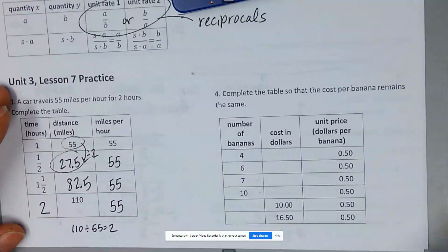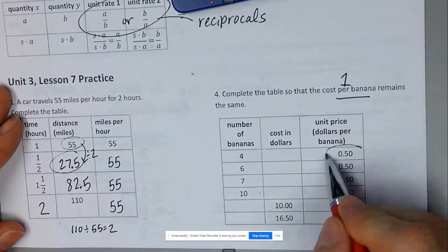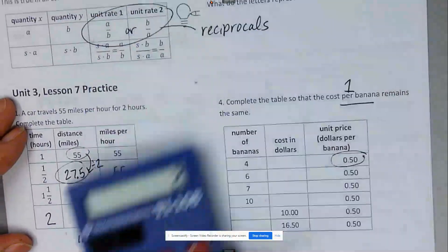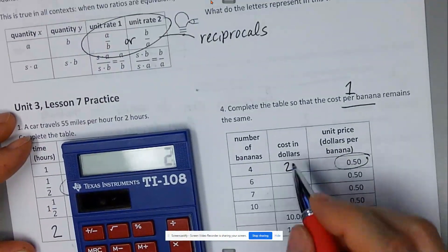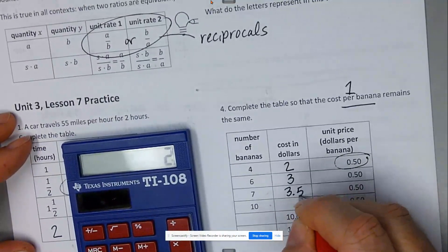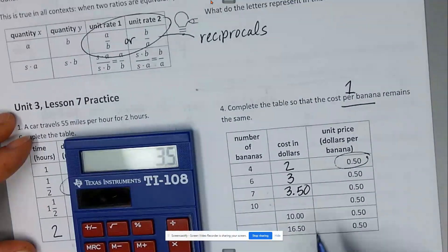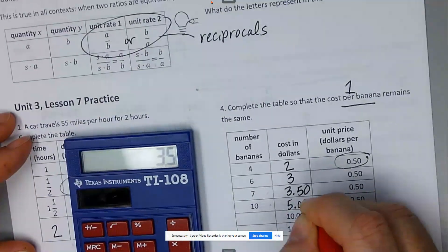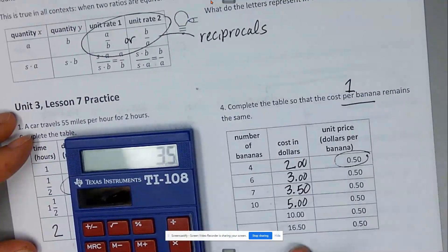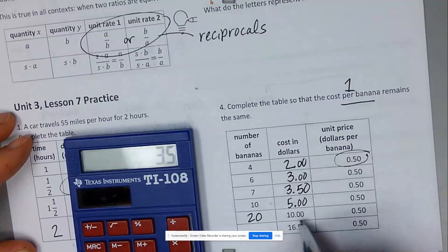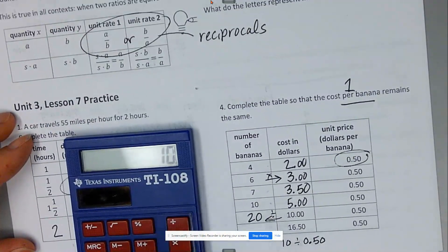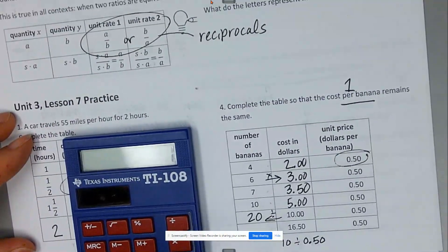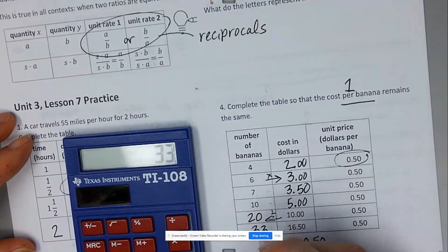For the second table, I want to know the cost per banana, meaning one banana. They've already told us one banana costs fifty cents. How much will four bananas cost? Four times fifty cents is two dollars. Six times fifty cents is three dollars. Seven times fifty cents is three dollars and fifty cents. Ten times fifty cents would be five dollars. This column is always half, so this must be twenty. If you're not sure, remember we've been multiplying — going backwards means dividing, so ten divided by fifty cents gives us twenty. And sixteen fifty divided by fifty cents would be thirty-three.